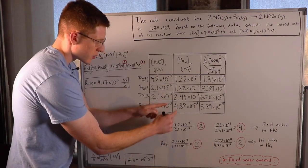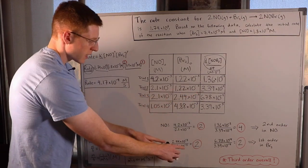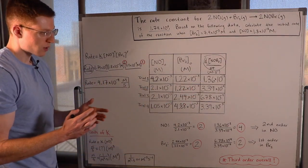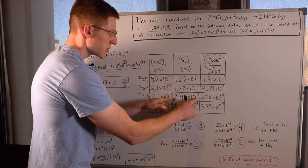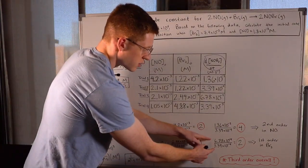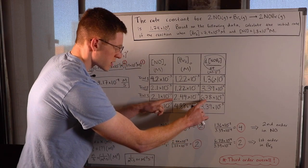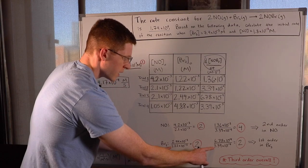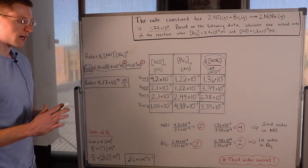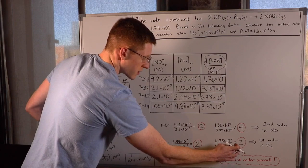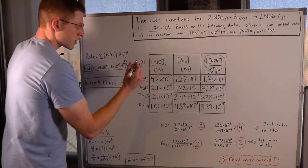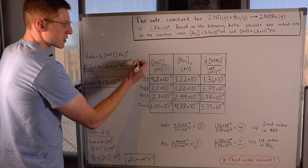If you do the math — 2.44 over 1.22 — that tells us the concentration of Br2 doubled from trial 2 to trial 3. In that same change, the rate went from 3.39 to 6.78 times 10 to the negative 4, also a doubling — an increase by a factor of 2. Since these numbers are the same, we know the reaction is first order in Br2, so that exponent is a 1.